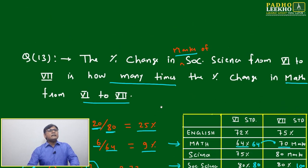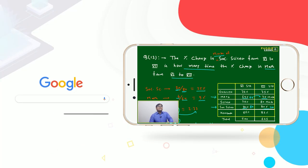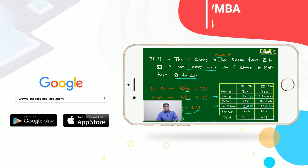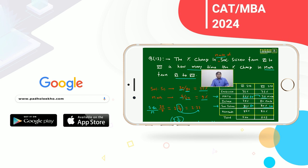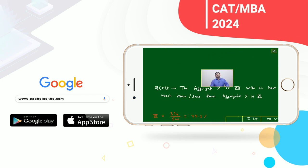Then 2.77 times. This percentage change in marks of Social Science from 6 to 7 will be 2.77 times the percentage change in Math from 6 to 7.